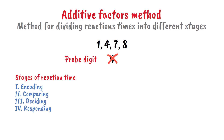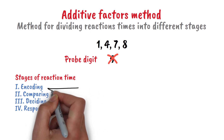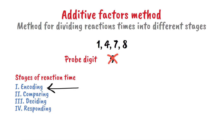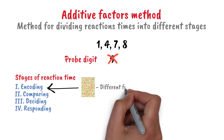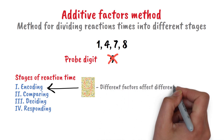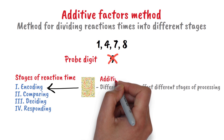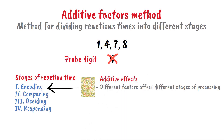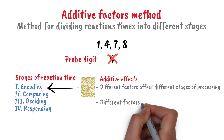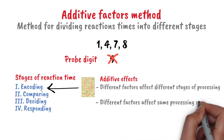Sternberg further proposed that each of these stages could be independently influenced by different factors. For example, the first stage can be influenced by how the number is presented — if we present the number nine with a noisy background, it can affect perception and take longer to encode than when we present it on a blank background. Based on this, Sternberg reasoned that if different factors affect different stages of processing, they should have additive effects on the overall reaction time. But if different factors affect the same processing stage, they should have interactive effects.